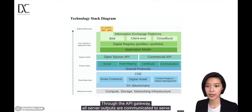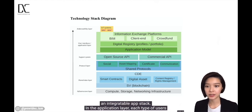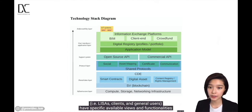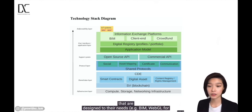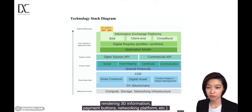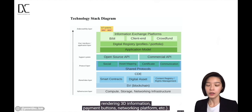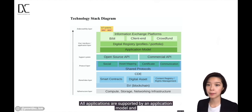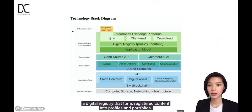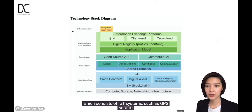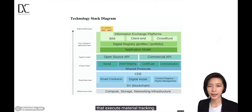Through the API gateway, all server outputs are communicated to serve an integratable app stack in the application layer. Each type of user — leases, clients, and general users — can have specific available views and functionalities designed to their needs. For instance, BIM, WebGL for rendering 3D information, payment buttons, networking platforms, etc. All applications are supported by an application model and a digital registry that turns registered content into profiles and portfolios. BIM applications interface the enforceability layer, which consists of IoT systems like GPS or RFID that execute material tracking.